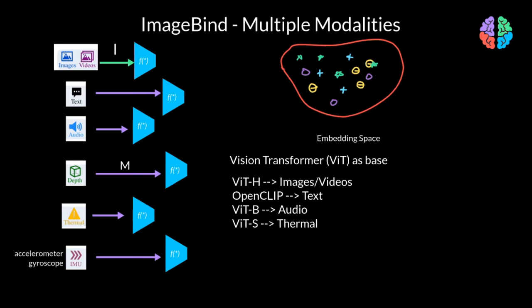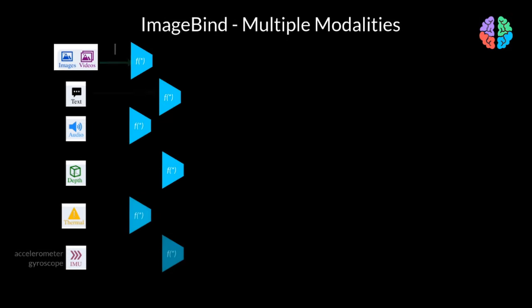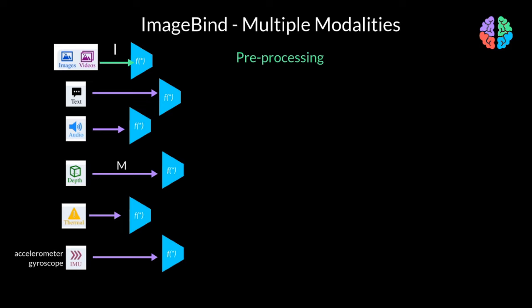During ImageBind training, the weights of the image and text encoder architectures are kept frozen, while the weights of all other modalities are updated. Because these two models are frozen, they use a pre-trained model for encoding images and text. This freezing ensures alignment to emerge between other modalities for which we don't have any natural alignment, for example between audio and depth.